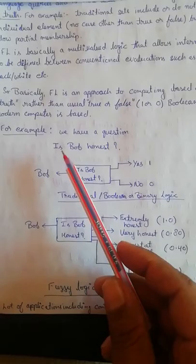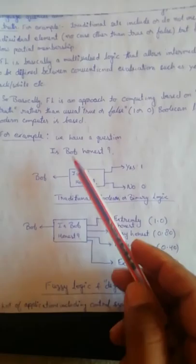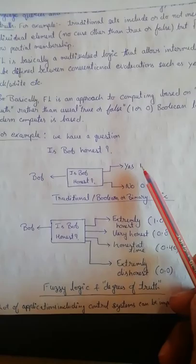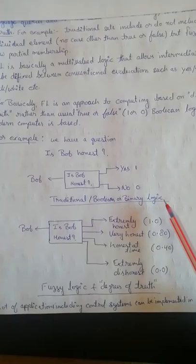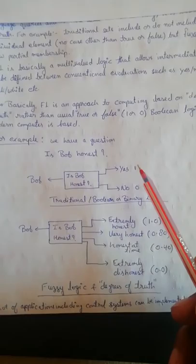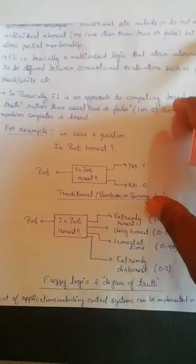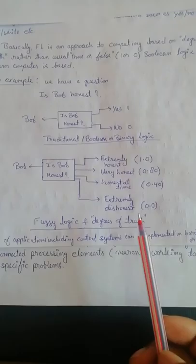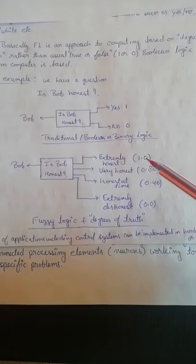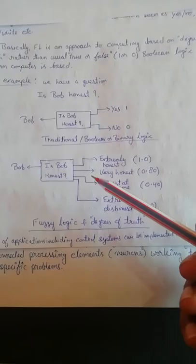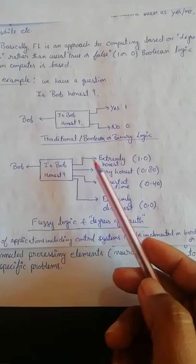We can understand this with an example. Consider the question: 'Is Bob honest?' According to boolean logic, the answer will be either yes (1) or no (0) — true or false. But in fuzzy logic, there are many cases in between zero and one. Fuzzy logic tries to be more practical in computation.